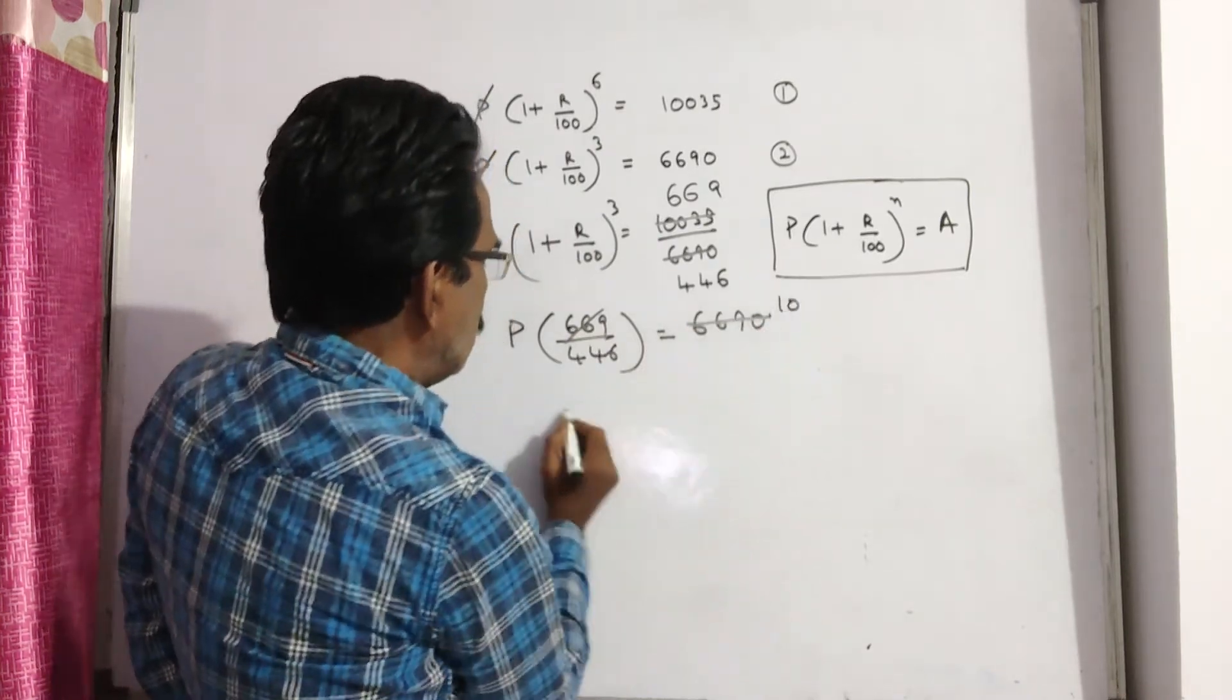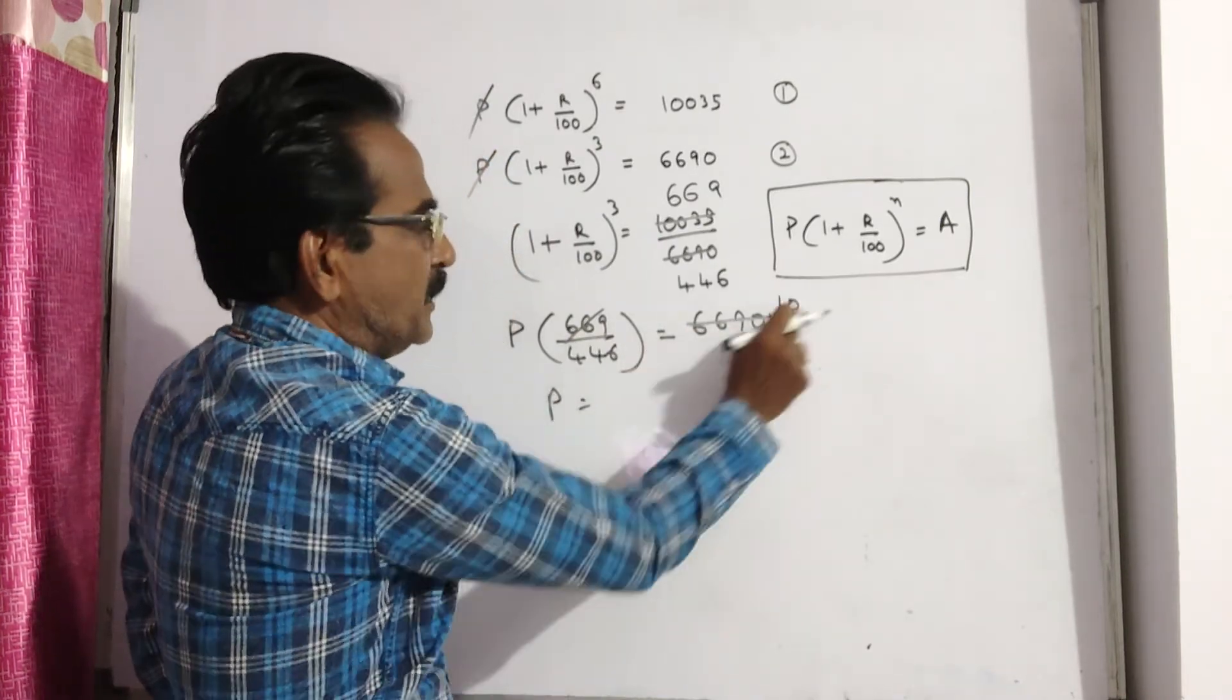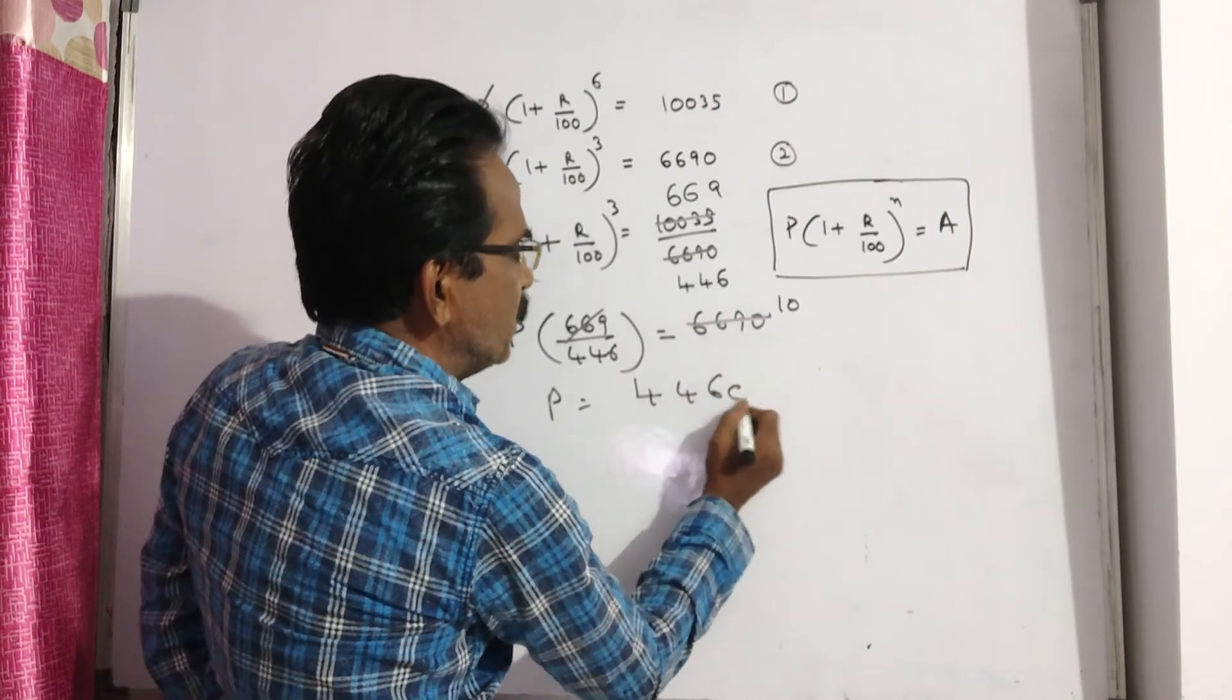Hence, P is equal to 446 into 10, 4460, 4460.